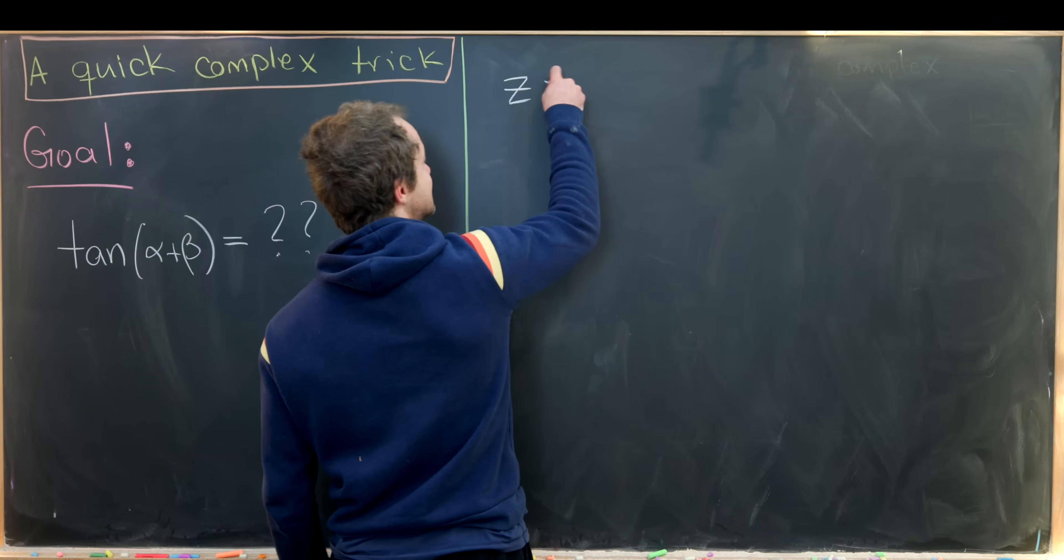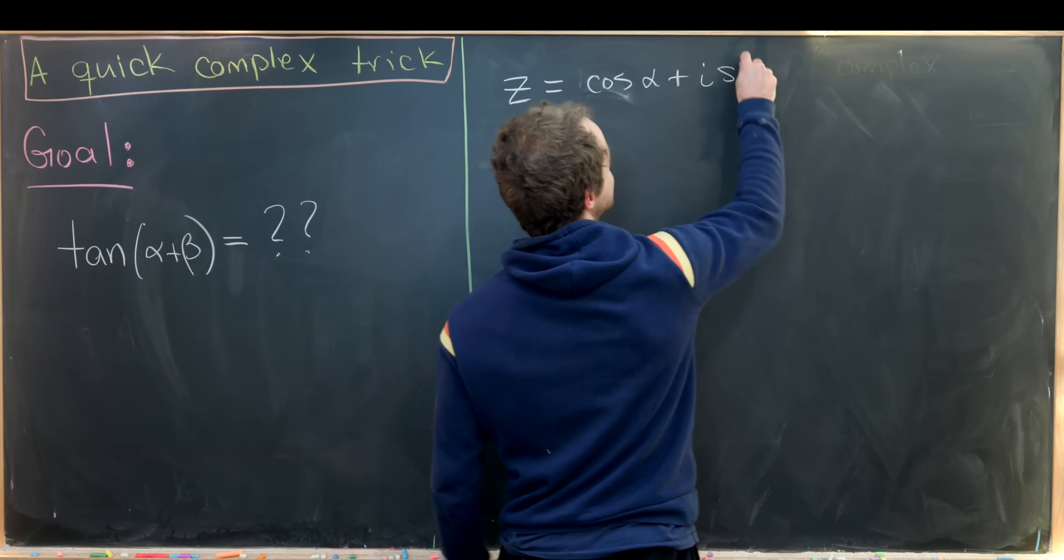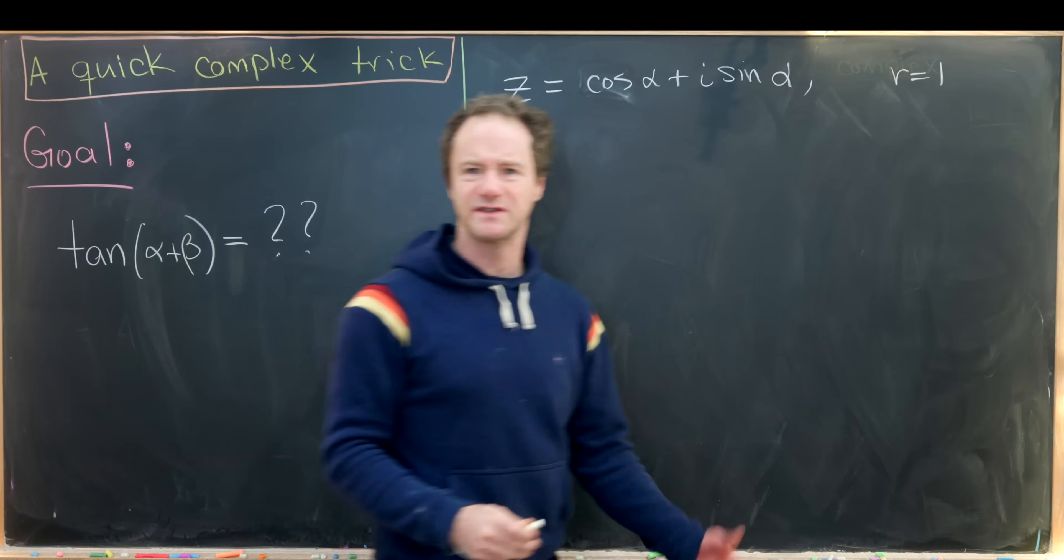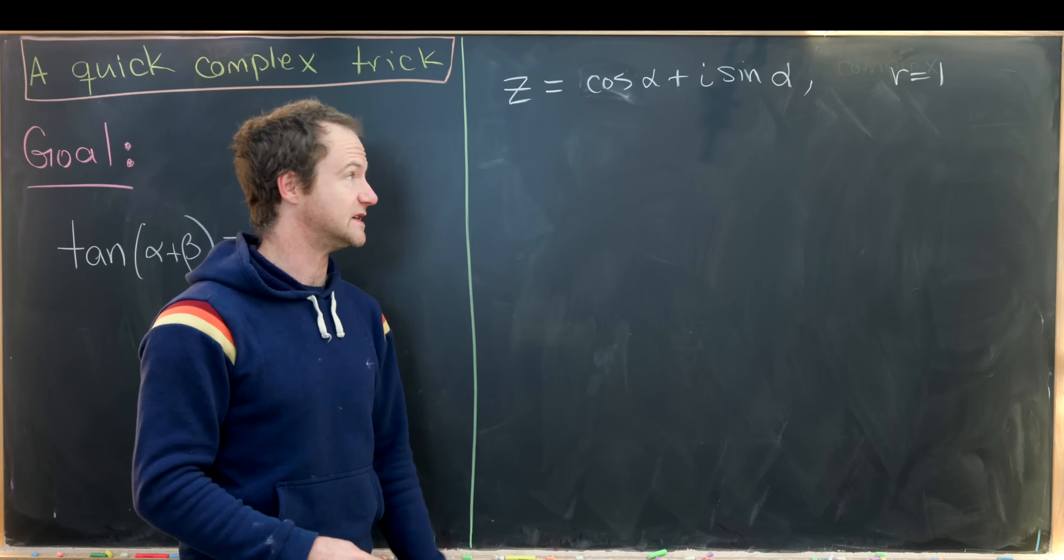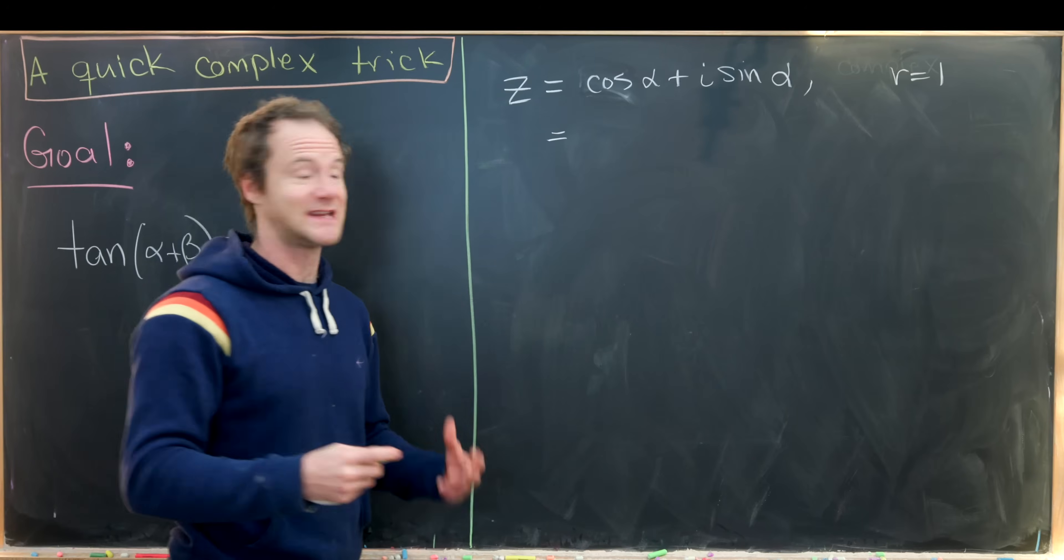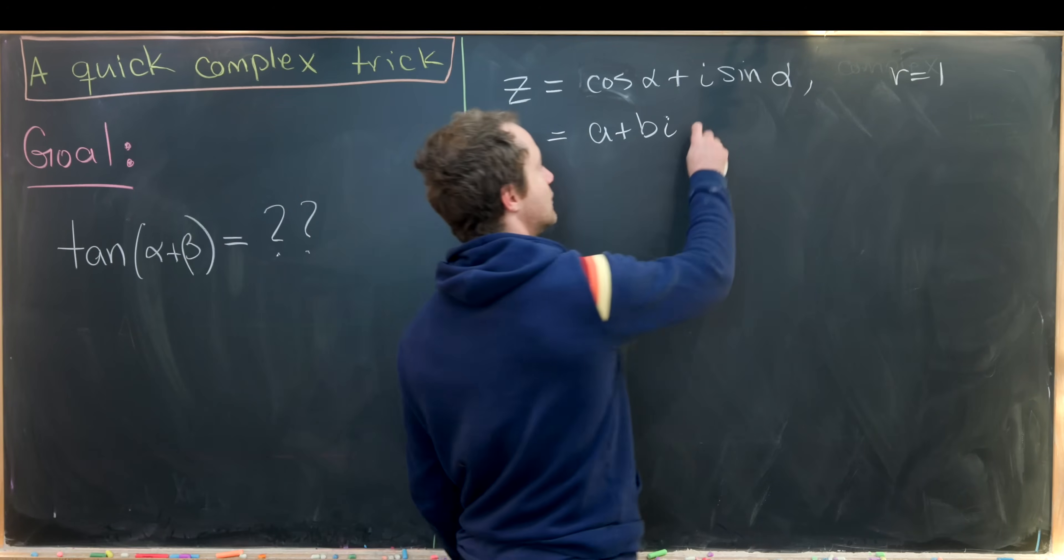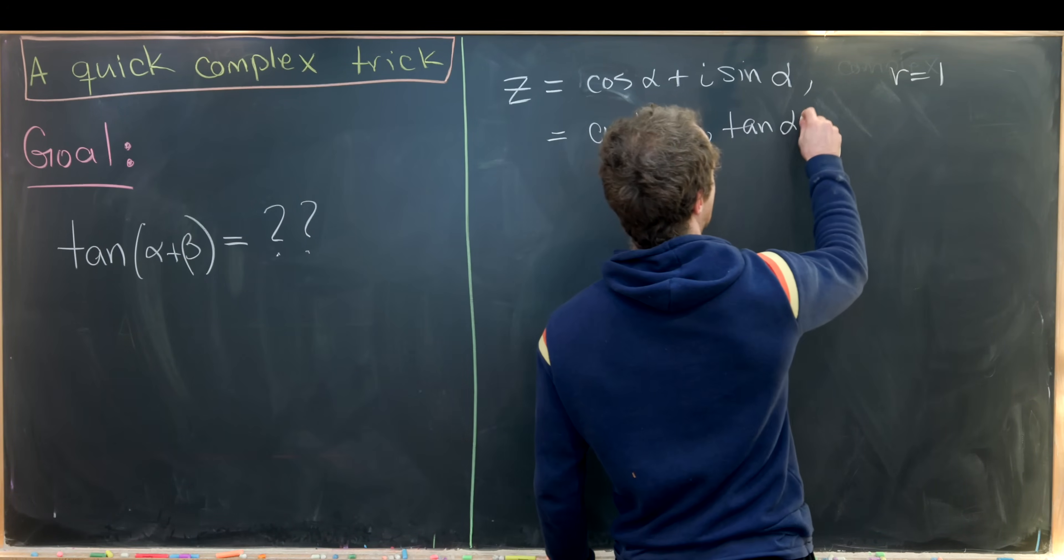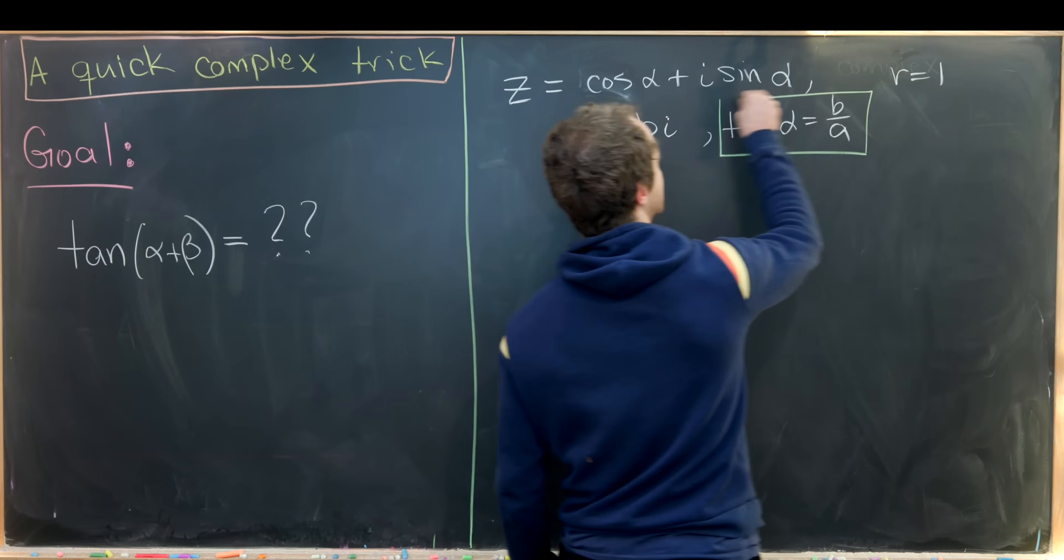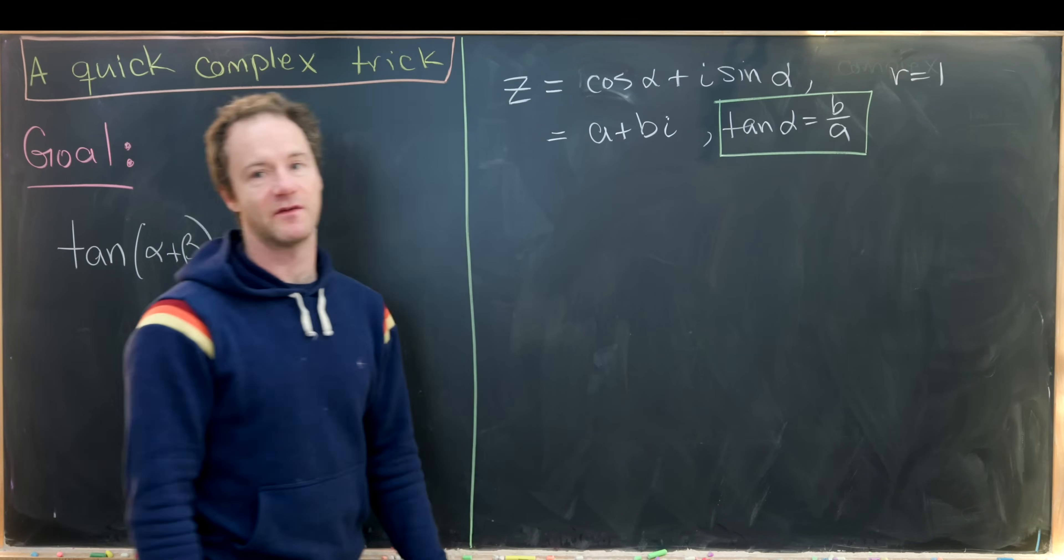So let's set z equal to the complex number cosine alpha plus i times sine of alpha. Notice the r value here is one. In other words, the distance from the origin, the radius of this number z, is one. But then if we expand this into rectangular form and write this as a plus b times i, then we see that the tangent of alpha is equal to b over a. That's maybe the most important part of what we're writing down here. The tangent of the argument of a complex number is equal to the imaginary part divided by the real part.